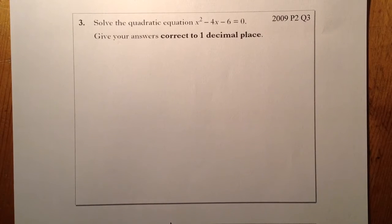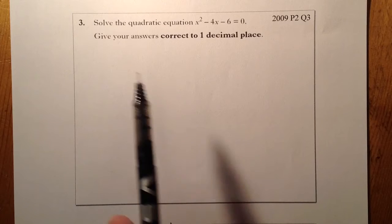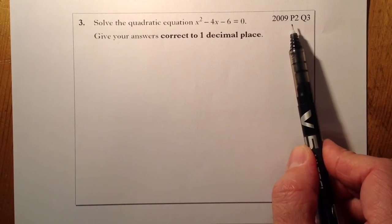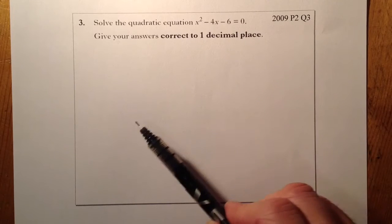This is national five exam practice homework. We're looking at question three from standard grade credit 2009 paper two, so it's a calculator paper that we're on here.